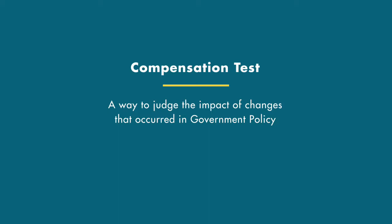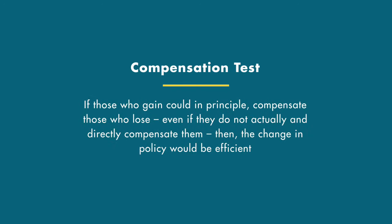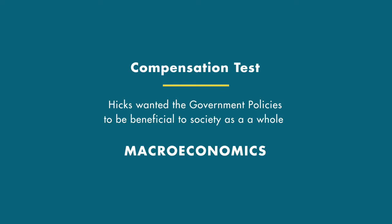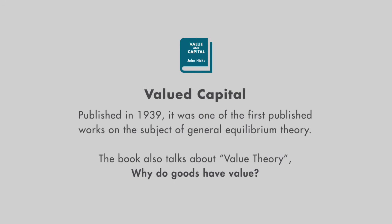John Hicks' second contribution, the compensation test, was a way to judge the impact of changes that occurred in government policy. According to Hicks, if those who gain could, in principle, compensate those who lose, even if they do not actually compensate them, then the change in policy would be efficient. What Hicks had in mind was having government policies be beneficial to society as a whole, which has much to do with macroeconomics, which is studying the economy as a whole.